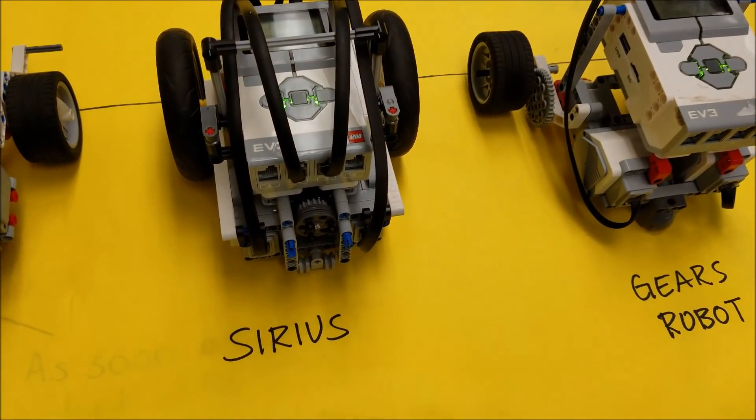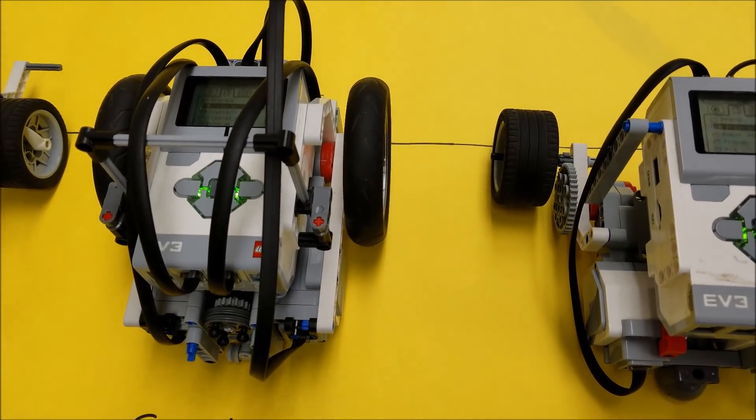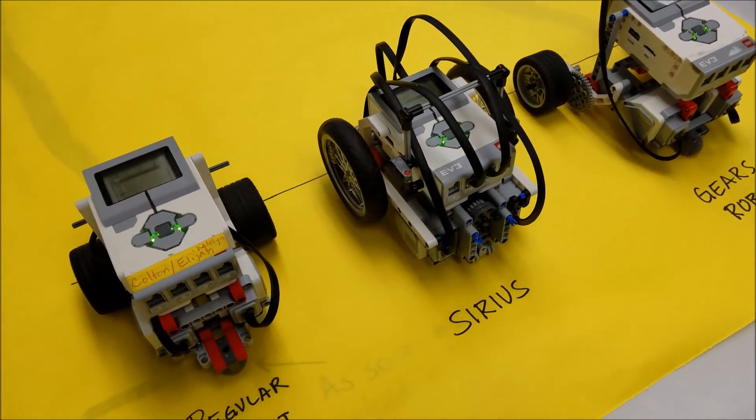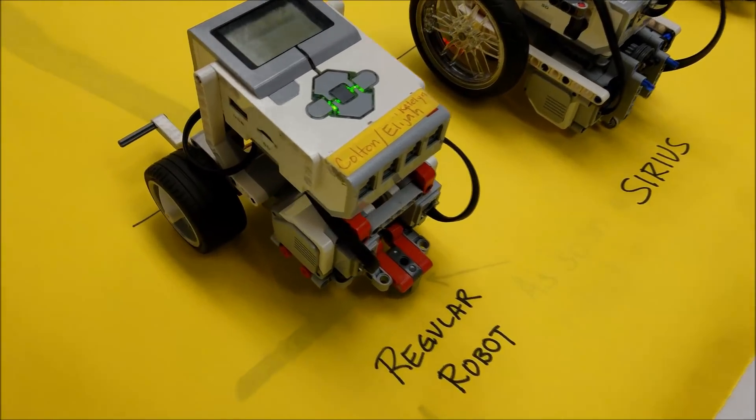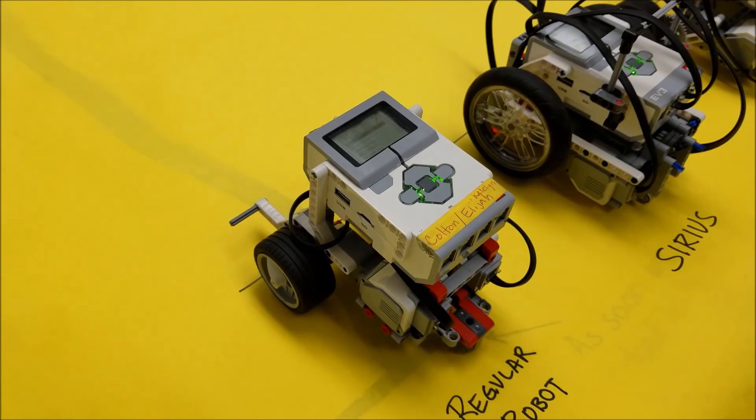Then we have the Sirius robot from before. Yes, and I know the difference in the motocross wheels, but we just thought we would put him in there as a contestant also. And then we just have a regular robot straight out of the kit. Nothing fancy. No gears. No motocross wheels.